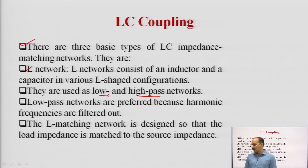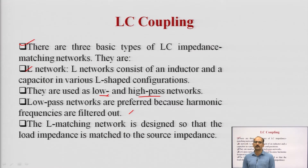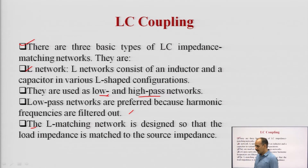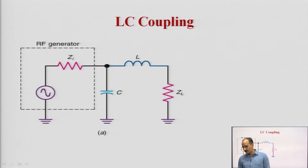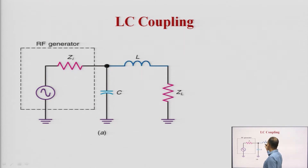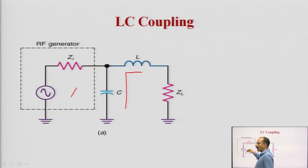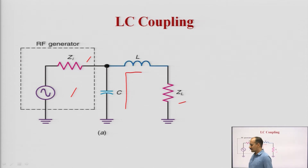Low pass networks are preferred because harmonic frequencies are filtered out — in a low pass, higher harmonics of the frequency signal will not be present. In the L matching network, it is designed so that the load impedance is matched to the source impedance, meaning there will be no reflections and no radiation ideally, but practically they may be present. In this circuit, you can see the L coupling — here is the inductor, here is the capacitor, and they are making an L-shaped structure. This is the input part, meaning the RF generator where the signal is generated — that is the input impedance. That is ZL, meaning the output or load impedance where the complete signal is going to be dissipated.